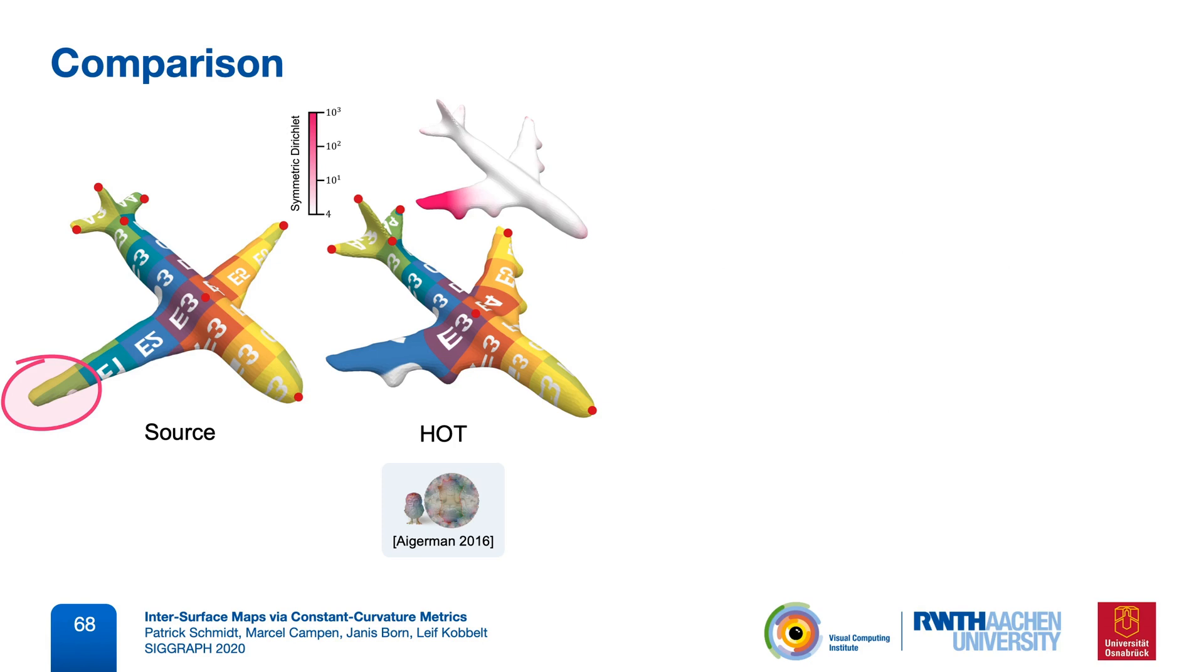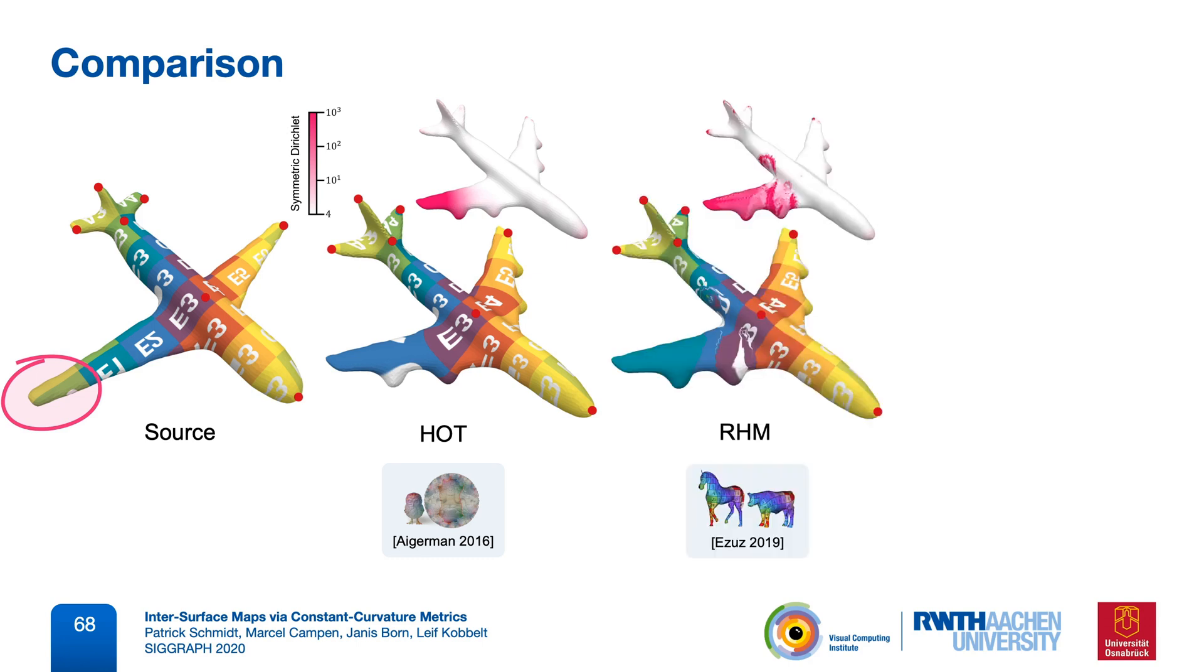HOT produces a continuous bijection, but doesn't directly optimize mapping distortion. The resulting map is smooth, but with high distortion, since the algorithm has no incentive to correctly align the corresponding wings.